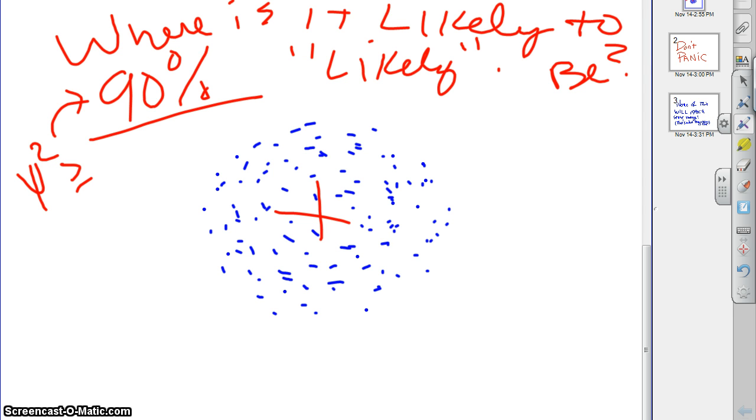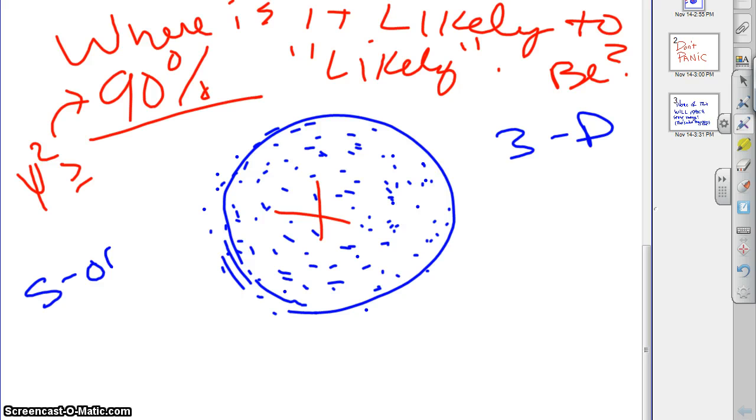And what we end up finding is we have this sort of dotted, misty area around here where it's likely to be found. And in fact, I'm doing a two-dimensional model. This looks like a circle, doesn't it? Well, it's actually a sphere. It's three-dimensional. So you'd have to kind of visualize a sphere. And so what we find is that that picture looks spherical for this particular kind of electron. And this is called an s-orbital if it's spherical. These are the lowest energy orbitals.